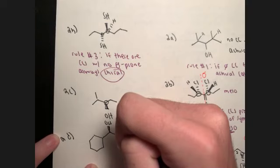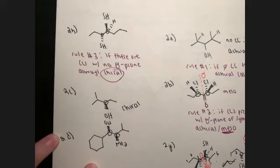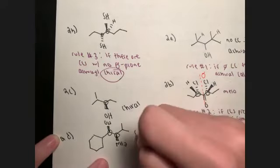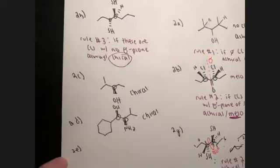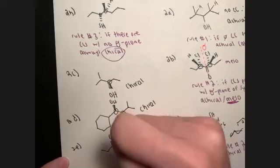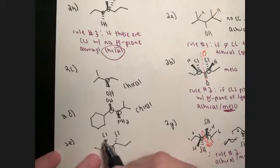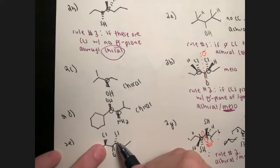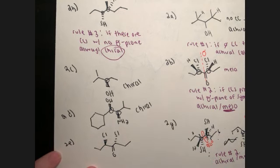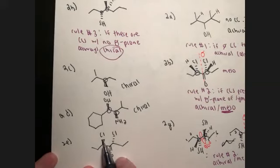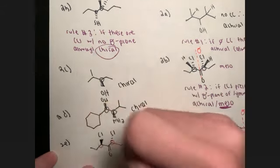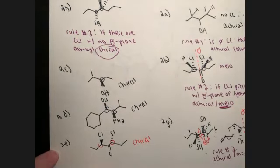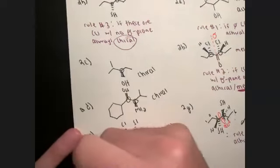Example 2d: two chiral centers — a hydroxyl and an amino group — with no symmetry. Rule 3: chiral. Example 2e: appears almost symmetrical around a ketone, but the wedge and dash orientations on each side are not the same, so there's no plane of symmetry. Two chiral centers, no sigma plane: Rule 3, chiral.